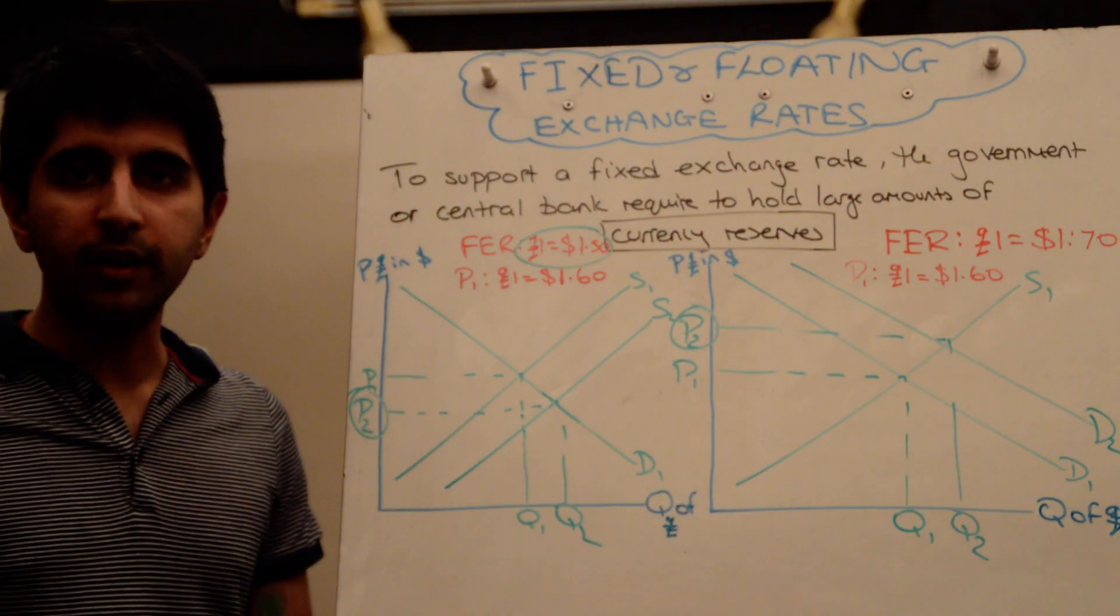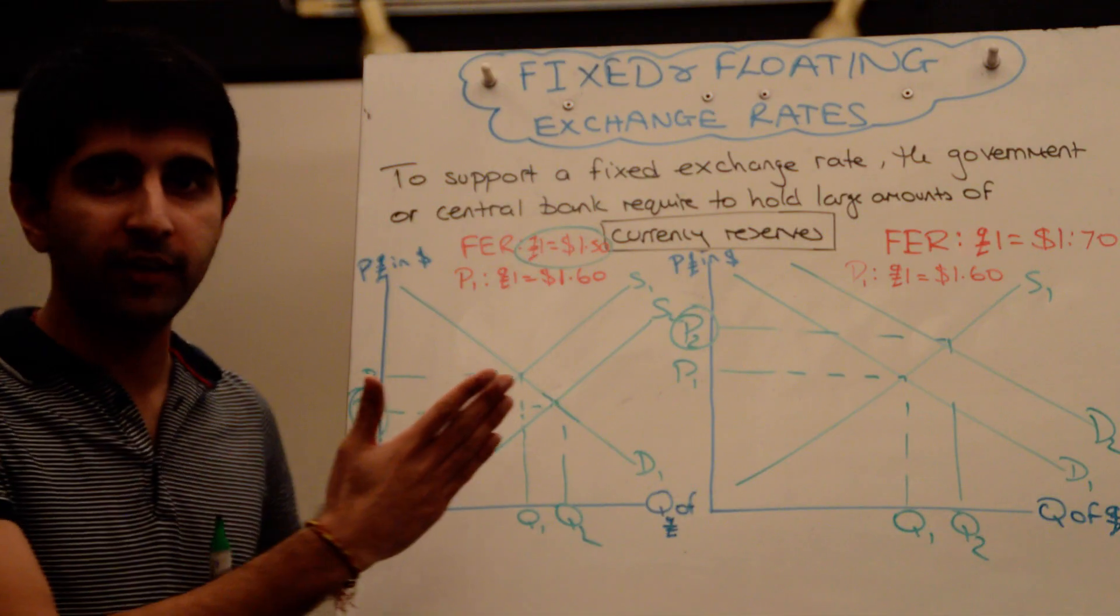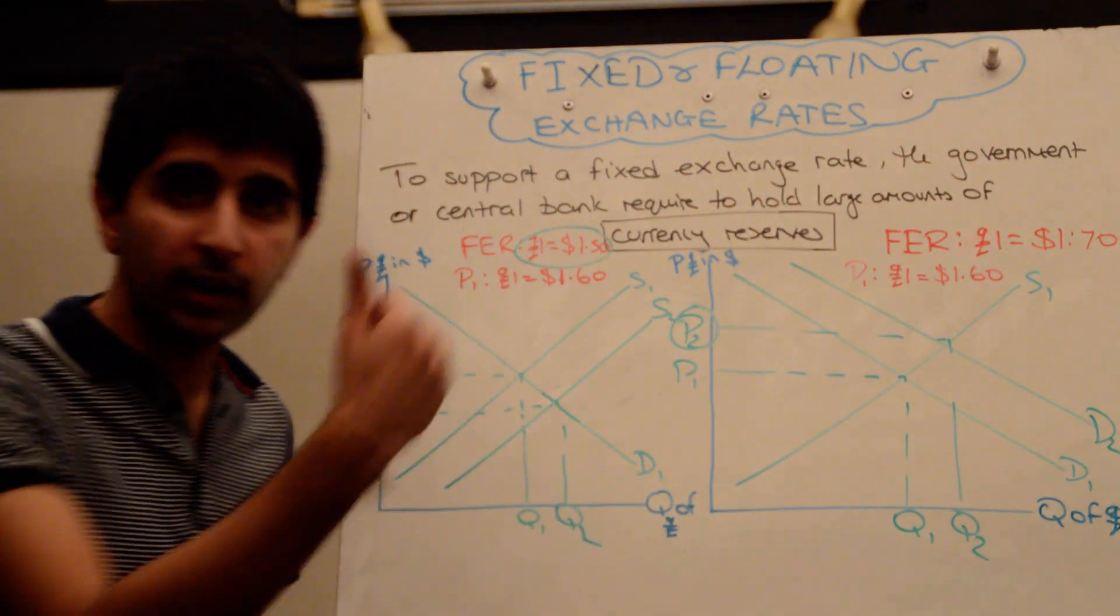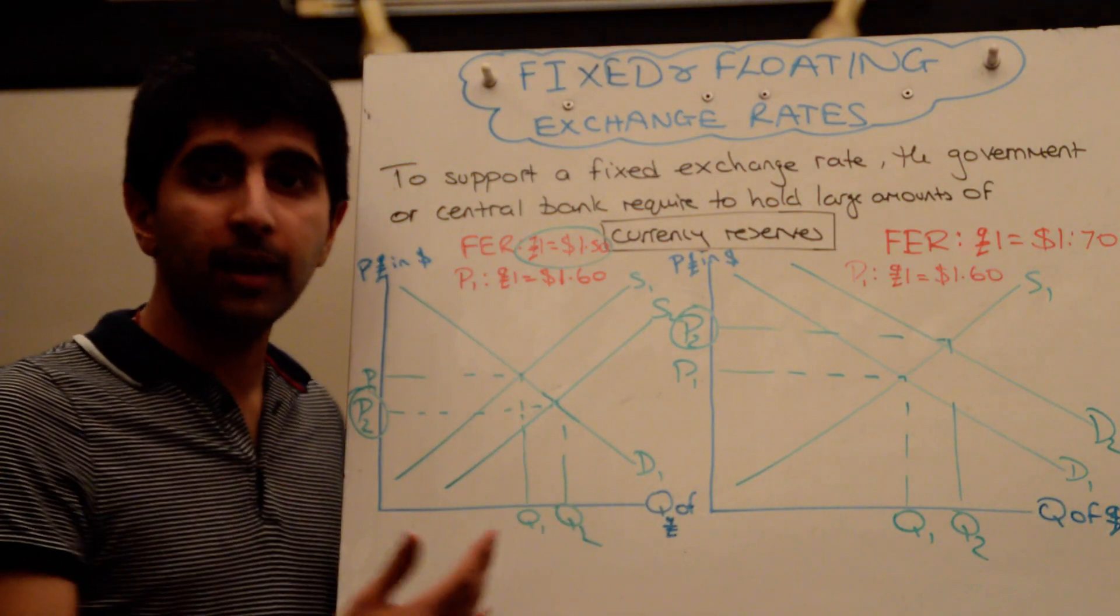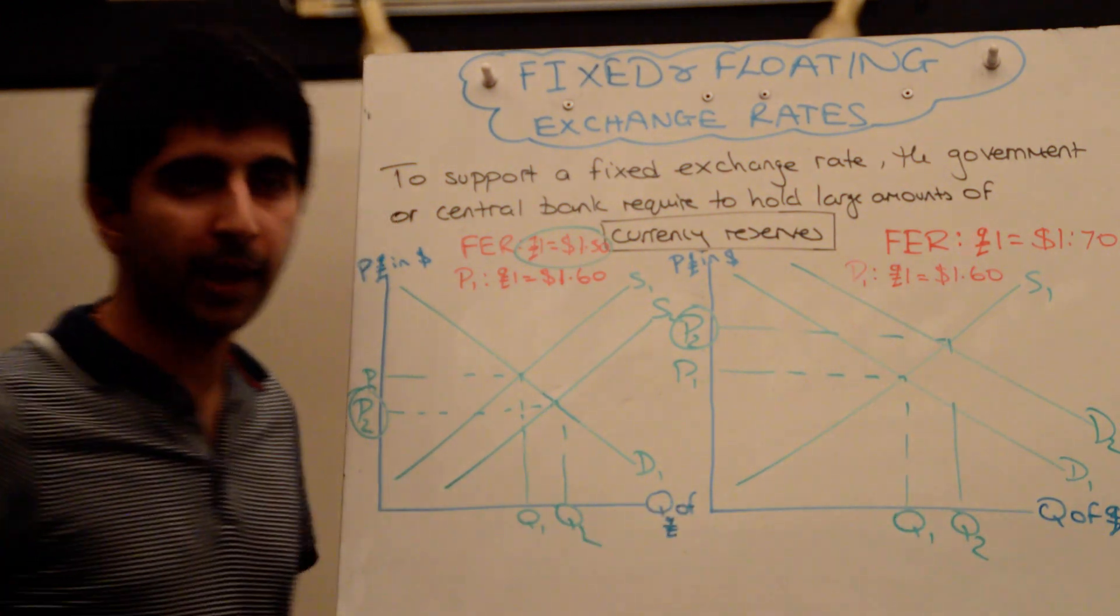So, if the pound is under pressure, rising pressure, needs to fall in value, then increase the supply of it, sell pound currency reserves. But if it's under falling pressure, it needs to actually rise, then use foreign currency to buy up the pound, increasing demand for the pound in that sense.